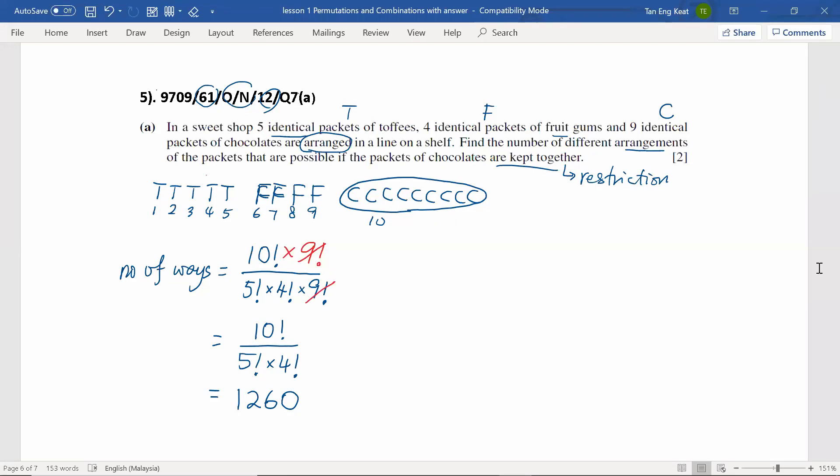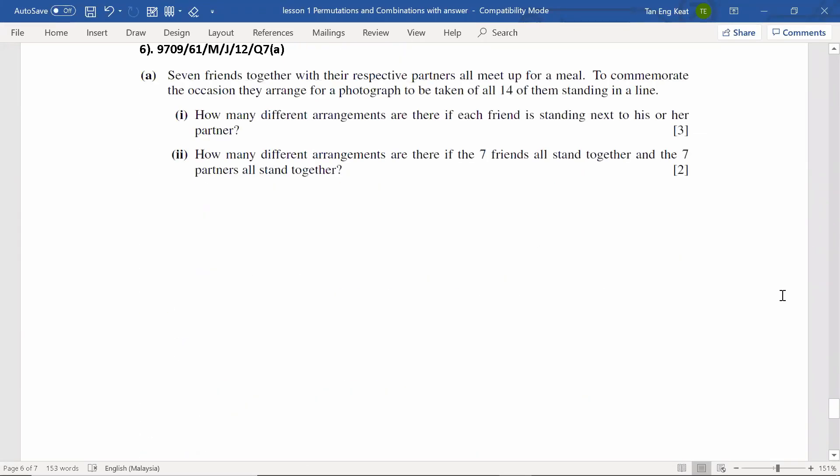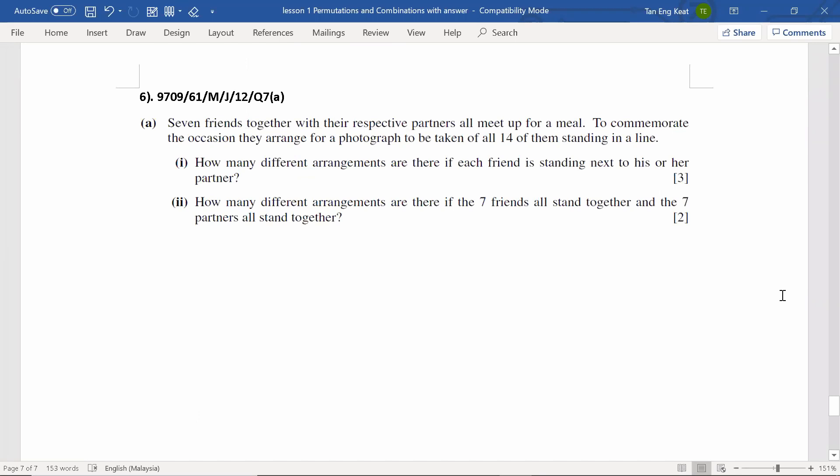Now, let's look at the next question. Have a look at question six. It's a question from May June 2012, variant 61. Seven friends together with their respective partners, all meet up for a meal. To commemorate the occasion, they arrange for a photograph to be taken of all 14 of them standing in a line. How many different arrangements are there if each friend is standing next to his or her partner?